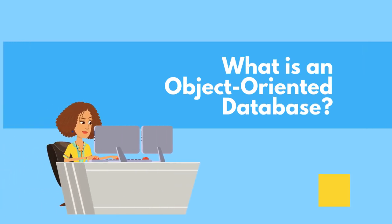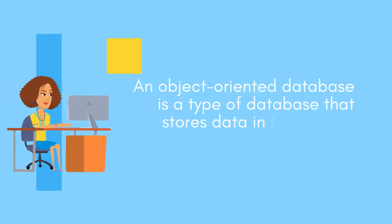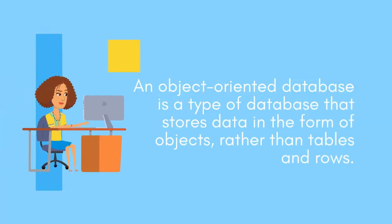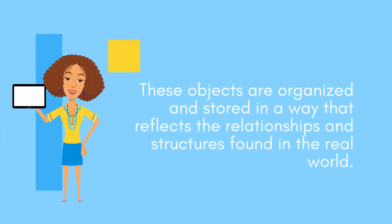An object-oriented database is a type of database that stores data in the form of objects, rather than tables and rows. These objects are organized and stored in a way that reflects the relationships and structures found in the real world.